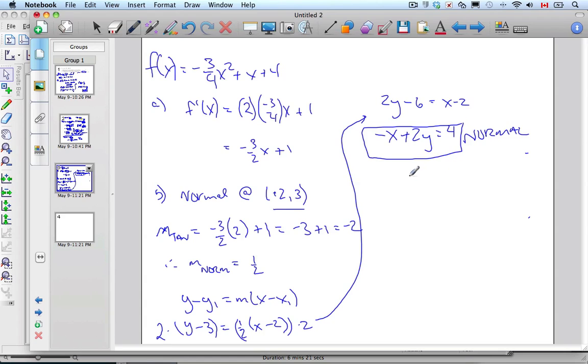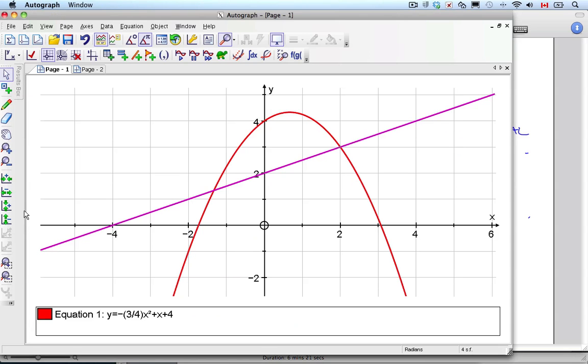And now, the little c part then says, this normal intersects the curve at another point, p. And it wants to find the x value for p. So, this here is p. And we want to find this x value here. Here's 2, 3. And this here is p I need to find.